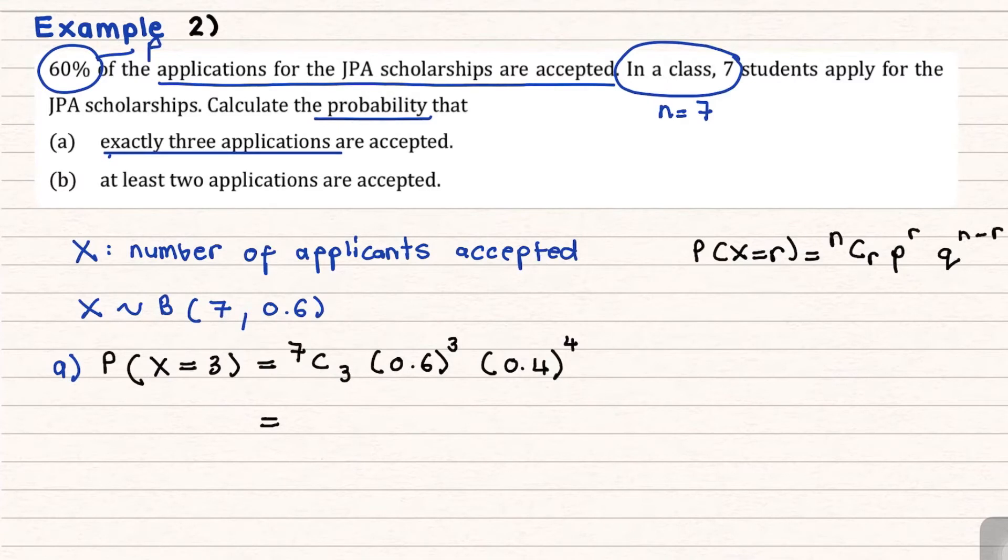Use your calculator to calculate, you will get your answer 0.1935, which is the probability of exactly 3 applicants accepted. So that is your final answer.